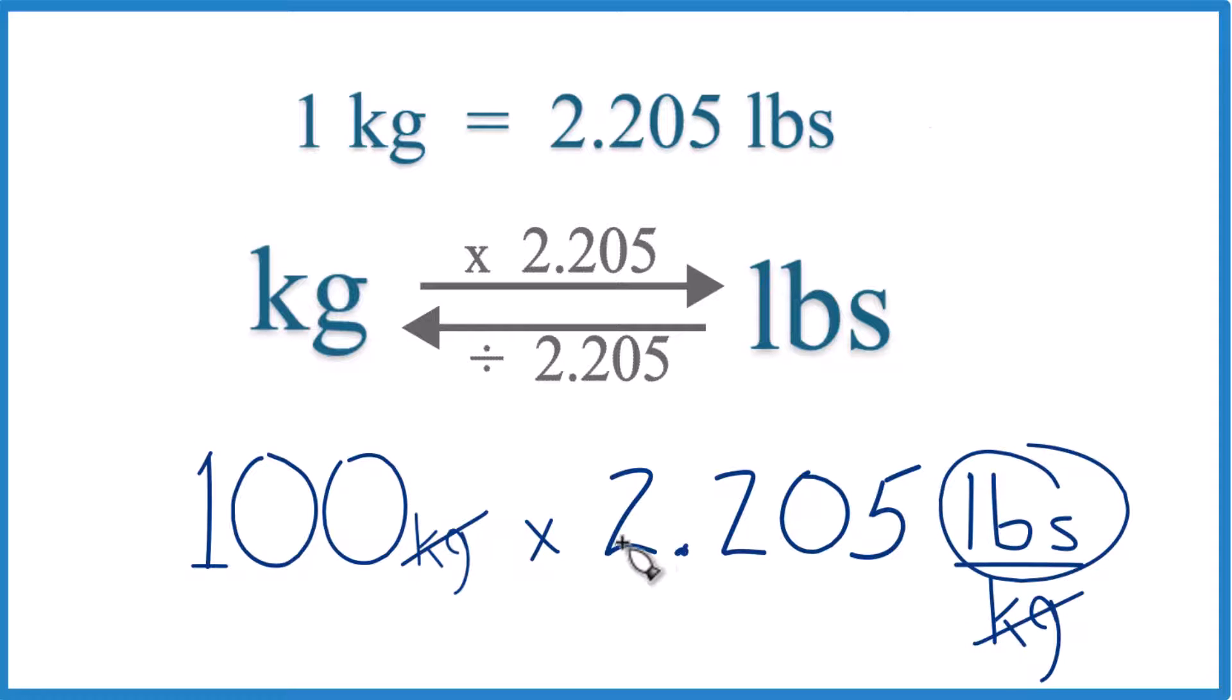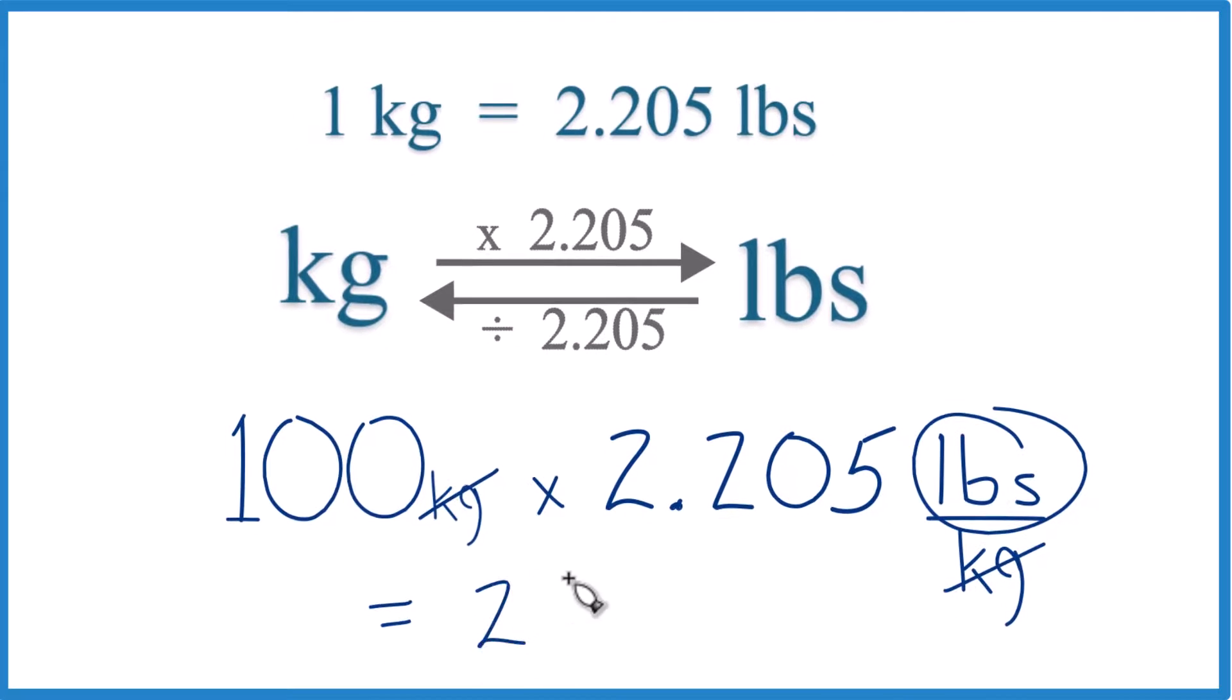So 100 times 2.205 pounds, that equals 220.5.